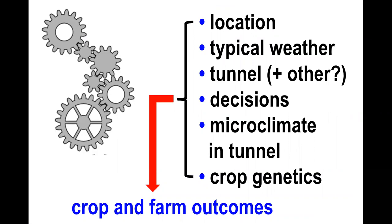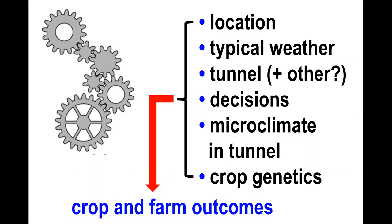The location of that tunnel — specifically where it is sited — is a very important beginning piece in determining the outcomes that will happen from using the tunnel. Obviously the site will have its own microclimate. The decisions that you make will also help create the microclimates that exist in the tunnel. And then the decisions about which crops and varieties you place in the tunnel — all of those together will lead to the outcomes that you experience with using the tunnel, which we hope are the best possible ones.